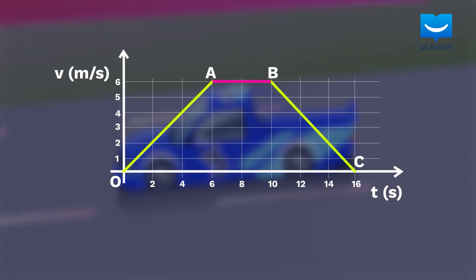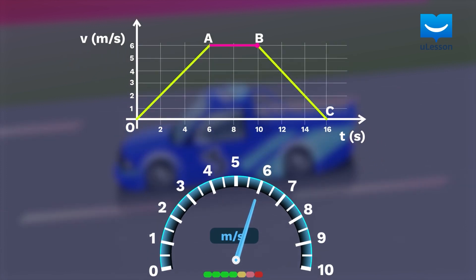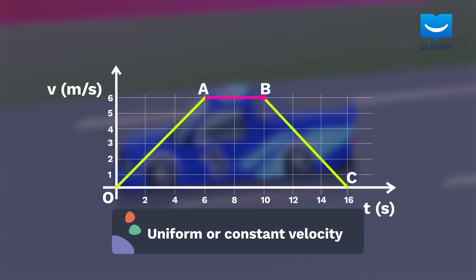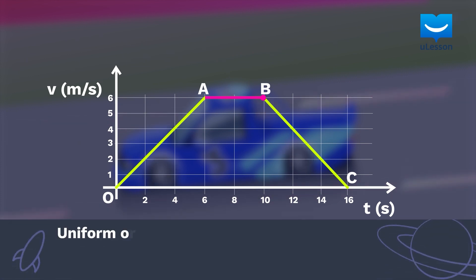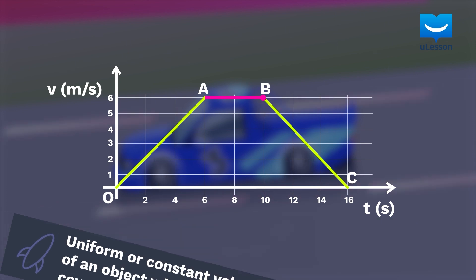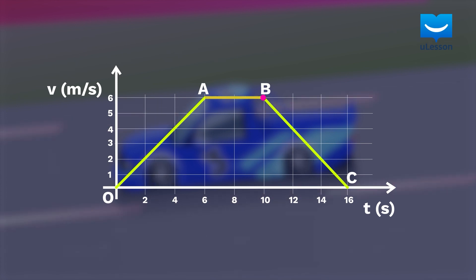Let's move on to the second part of the graph — the plateau. From A to B on your screen, you will notice that the velocity is neither increasing nor decreasing. That means it is just constant. We can say the body is undergoing uniform or constant velocity. We define this as the motion of an object where equal distances are covered in equal time intervals. This is the part of our velocity-time graph that is a straight line parallel to the time axis. Here, the slope of the graph is zero, therefore the acceleration is zero and the velocity does not change.